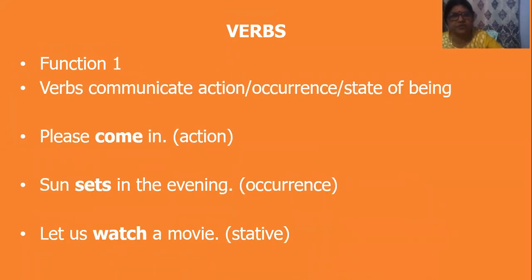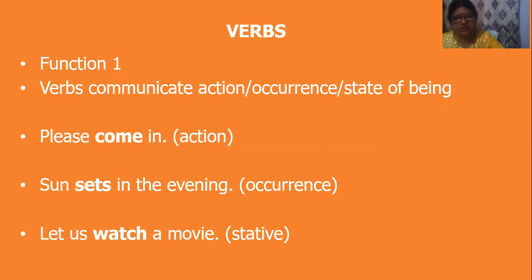The first function of the verb is to communicate an action, occurrence or a state of being. Simple examples for you. 'Please come in' — 'come' is an action verb. 'Sun sets in the evening' — 'sets' is an occurrence verb.